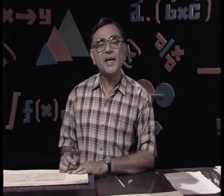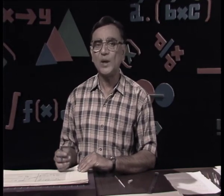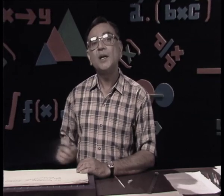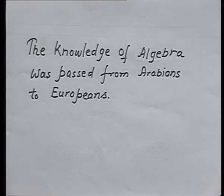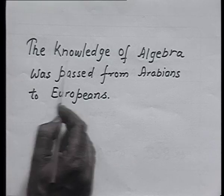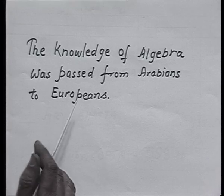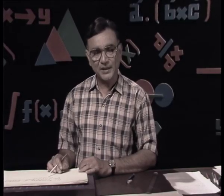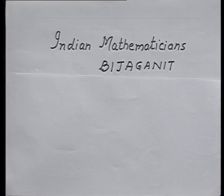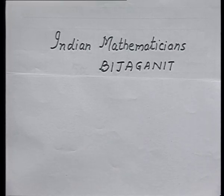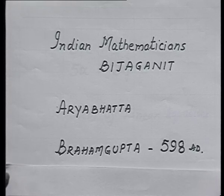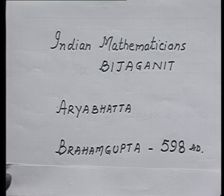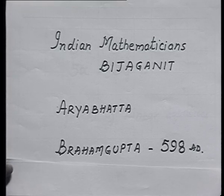The knowledge of algebra was passed from Arabians to Europeans, but prior to that it was very well known to Indian mathematicians. Indian mathematicians had worked on this concept and called it Bijaganith. The person who did a lot of work on linear equations was Aryabhata, and Brahmagupta in 598 AD is known to be the master of solving linear equations in two variables.